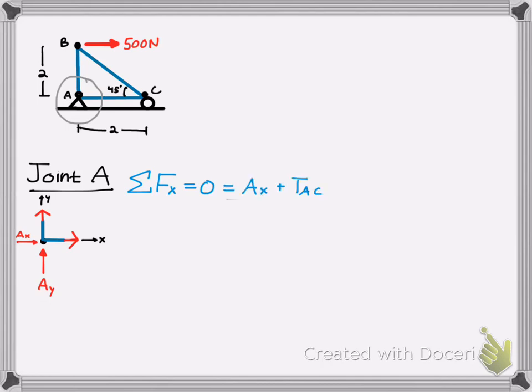We know the x reaction force is in the positive direction, and we also drew our free body diagram such that the tension in A, C is also positive. And simply, they're the opposite. So since we already calculated T, A, C, we know that A, x, the reaction force, is negative 500 newtons.